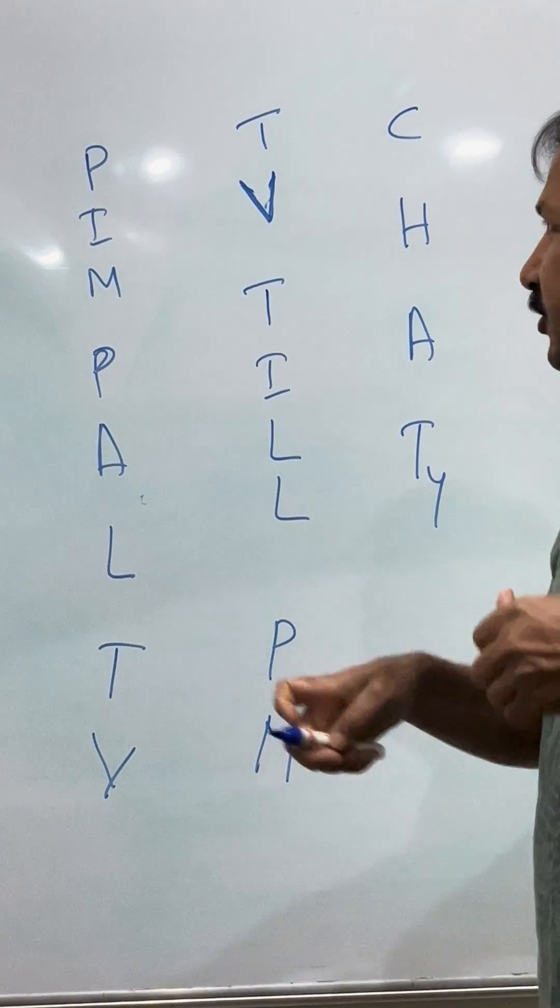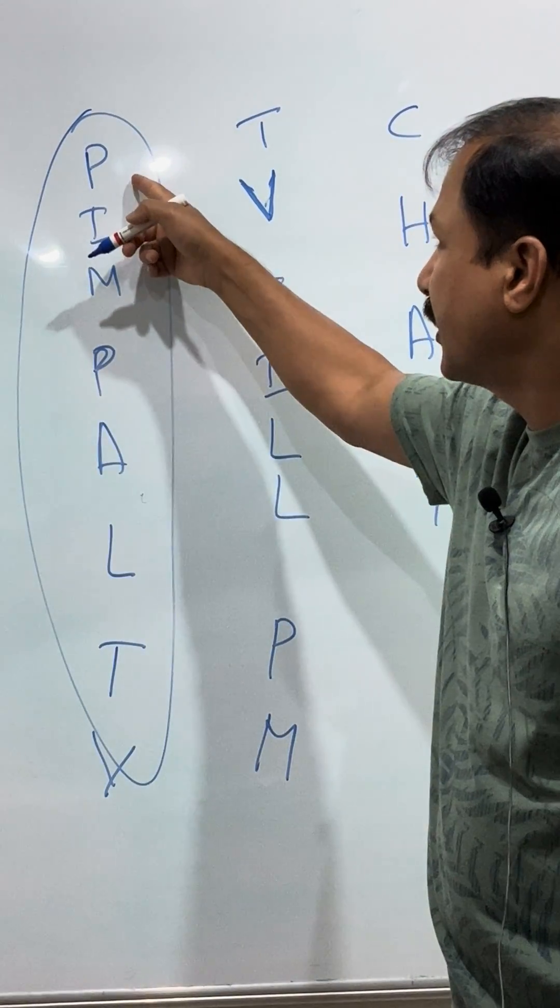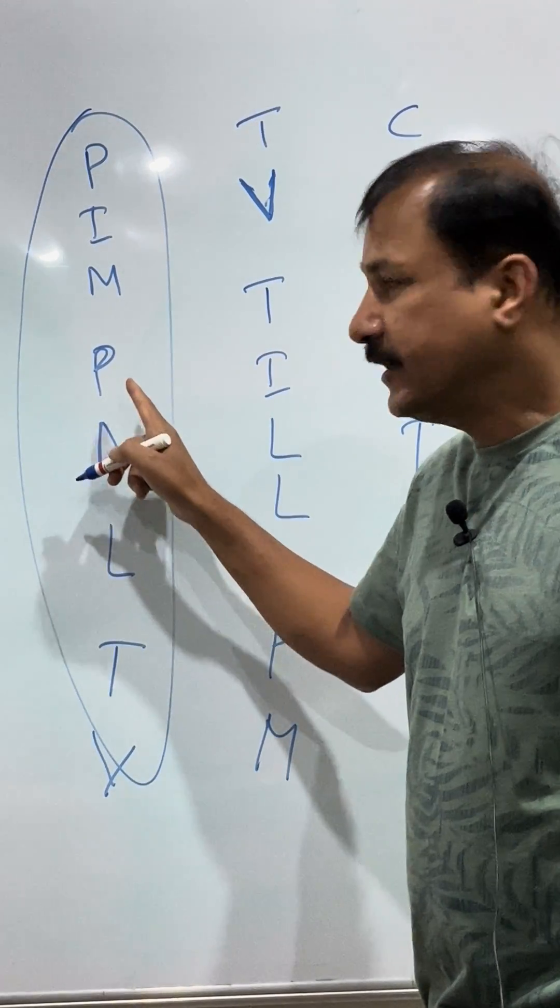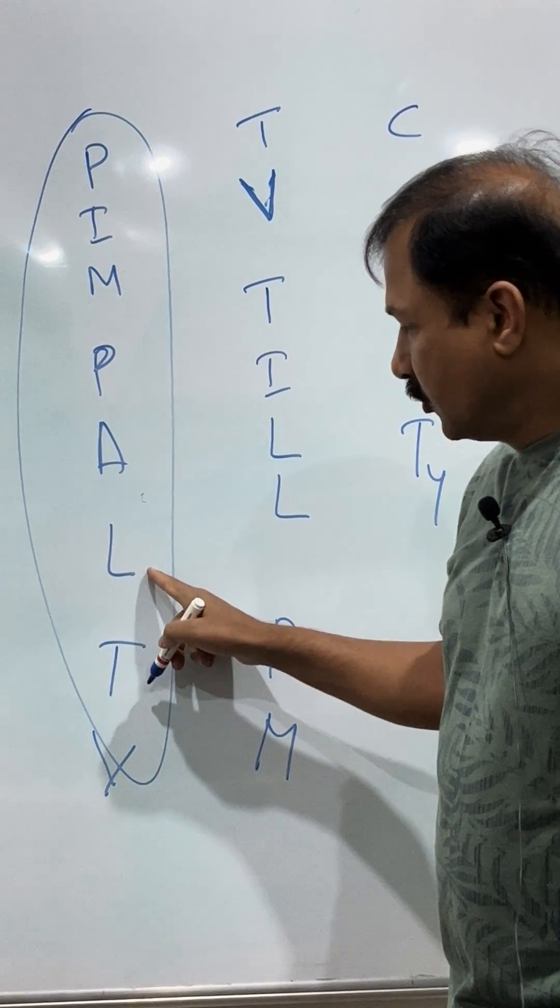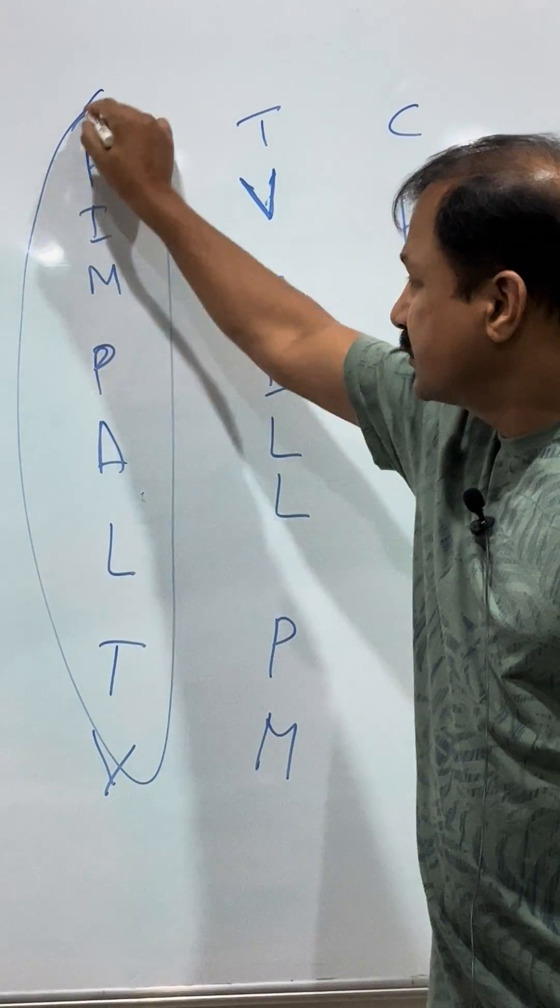Hydrophobic amino acids you can remember as PIMPAL-TV. P is phenylalanine, I is isoleucine, M for methionine, P for proline, A for alanine, L for leucine, T for tryptophan, and V for valine.